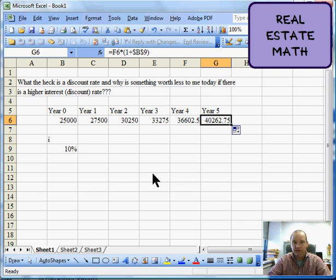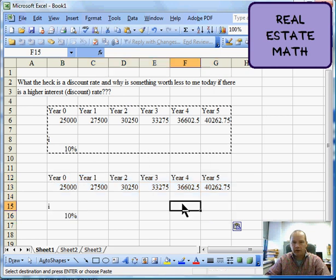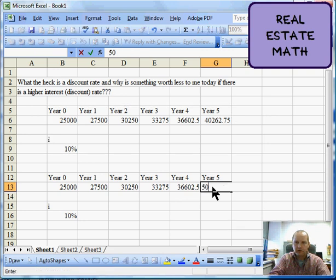The higher that rate of interest or higher that rate of that discount rate of what you expect to earn on your money, the less it's going to be worth. Let's take a look at how that would work. I'm just going to copy what we have in this area, put it down here, and we're going to work it in reverse.